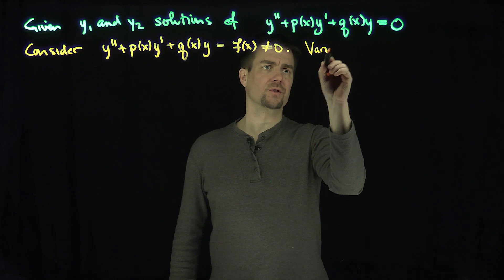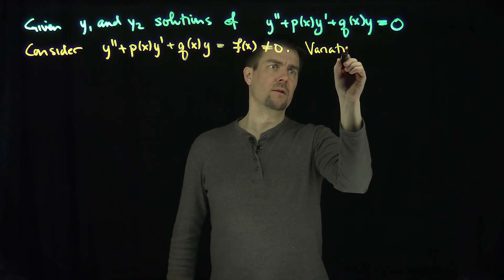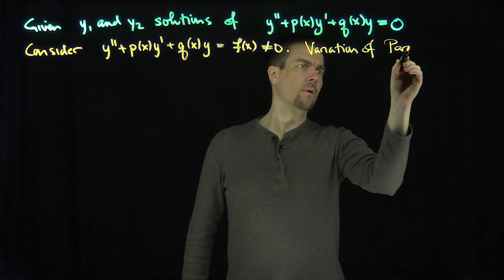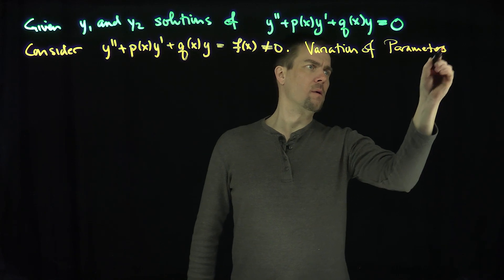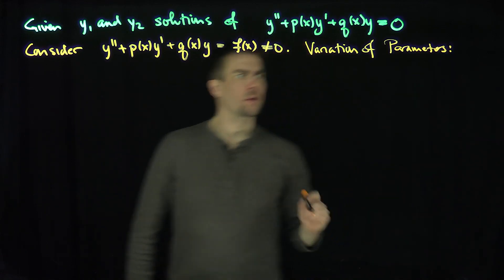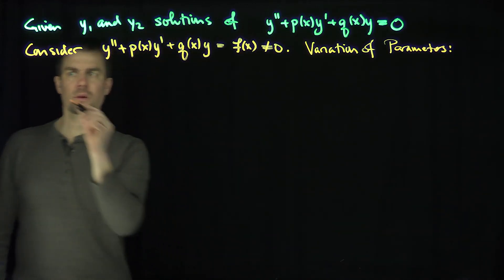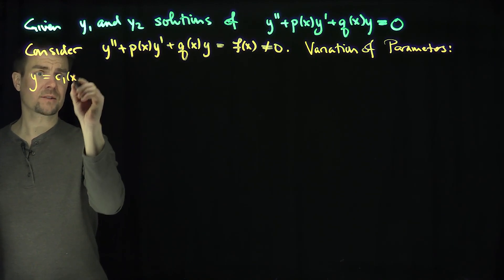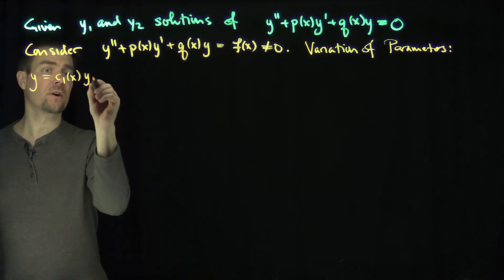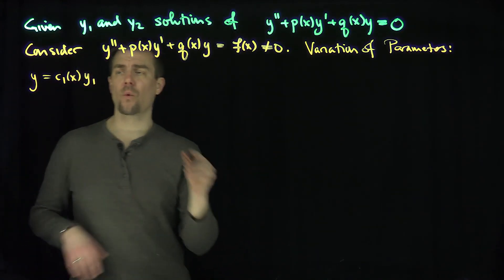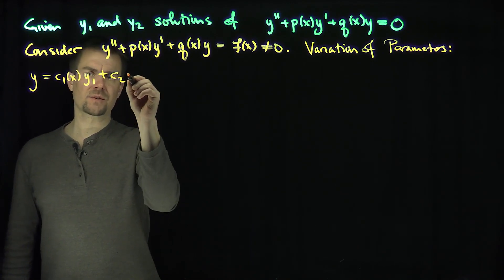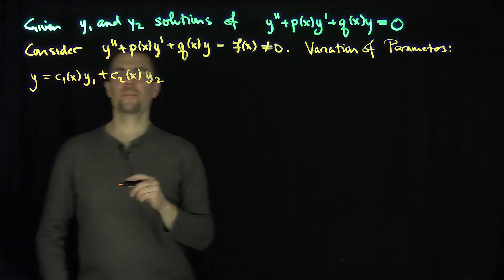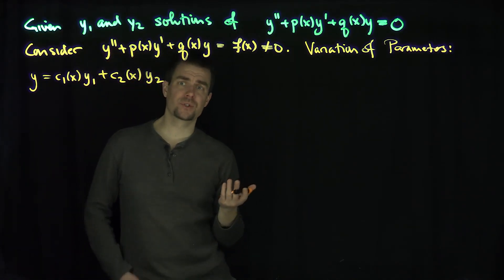Variation of parameters tells us how to look for the solution. We're going to look for a solution y of the form c1 of x times y1, plus c2 of x times y2. That's our variation of parameters scheme.